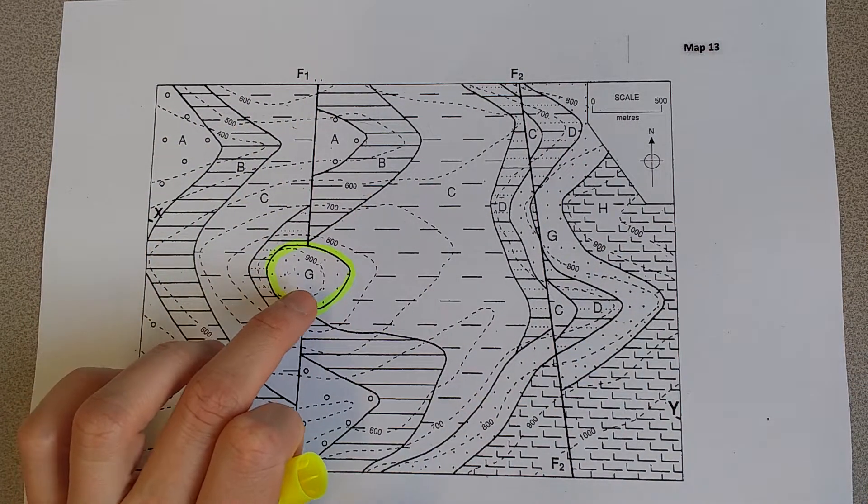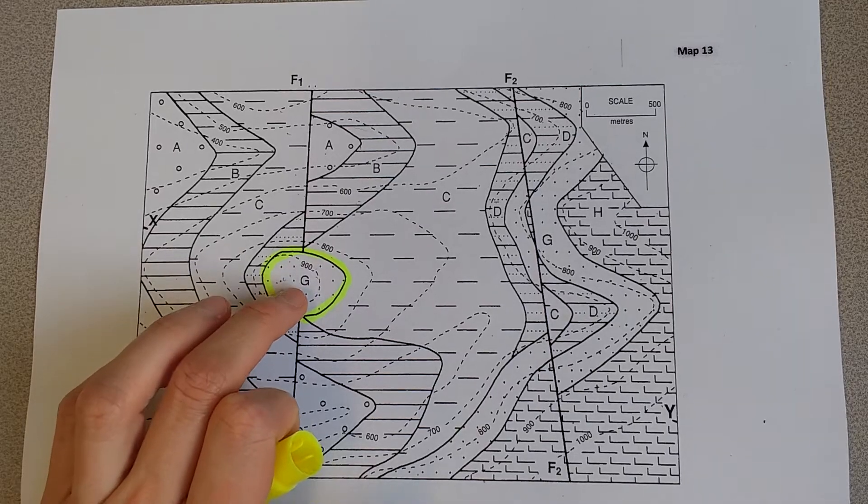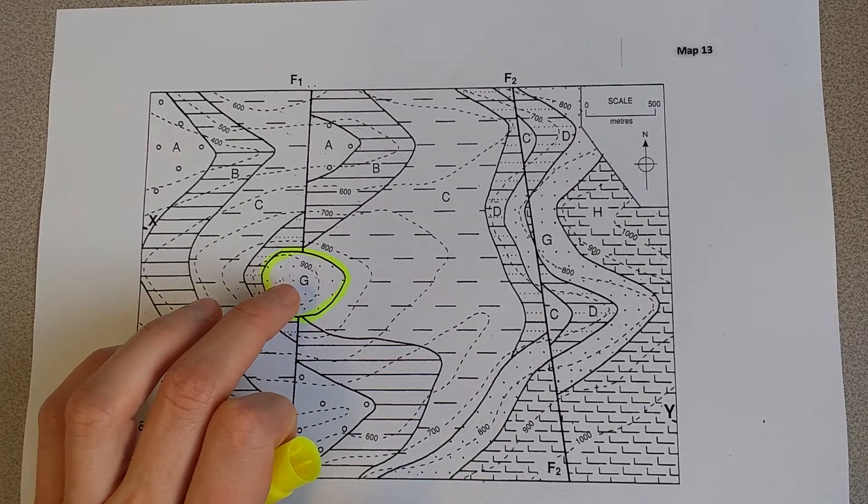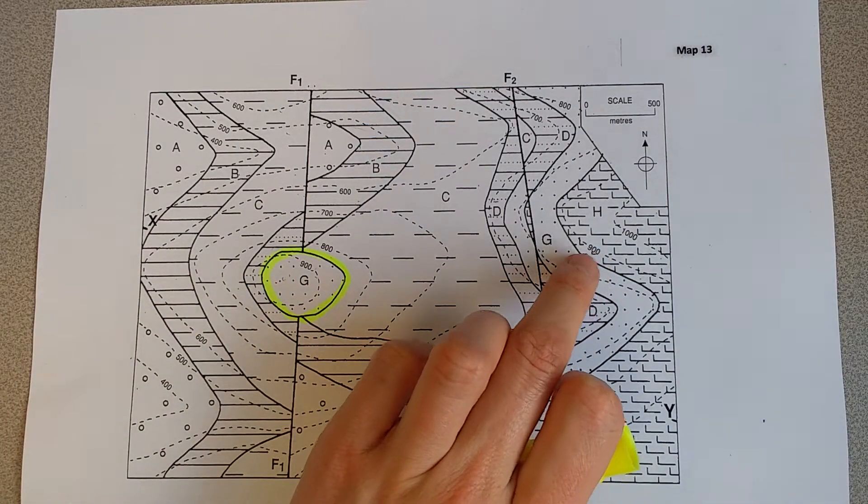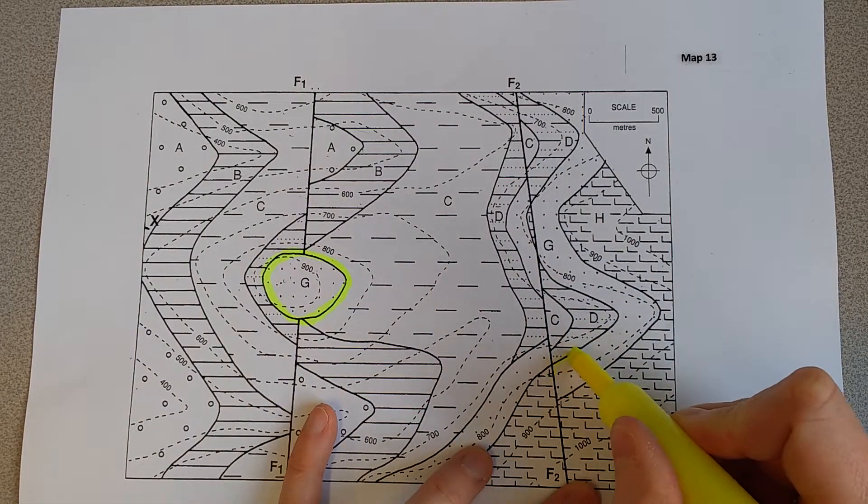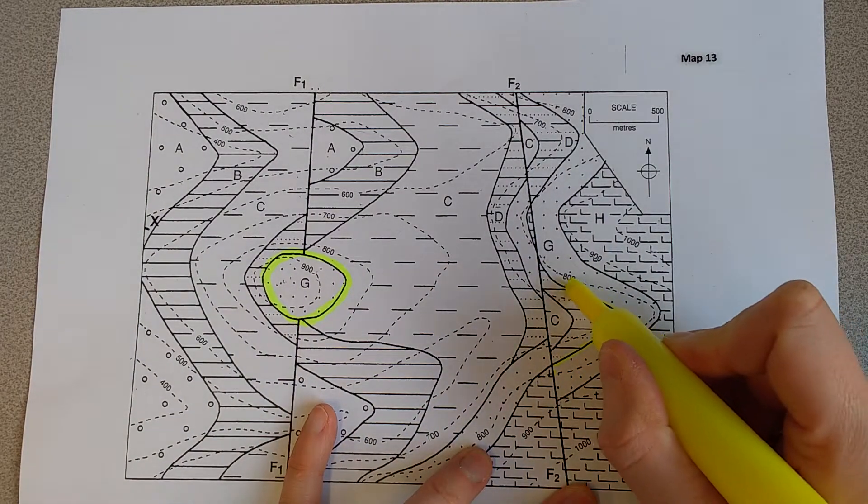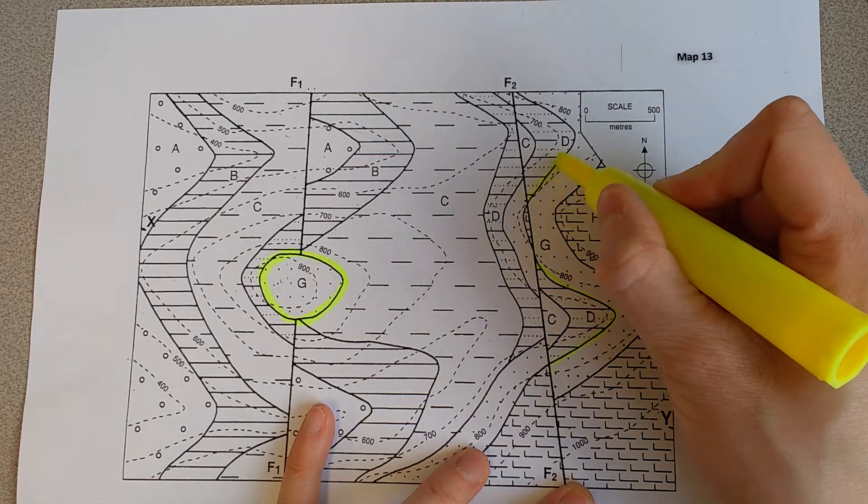Now because I know that unit G is above the unconformity, I can look elsewhere on the map where I've got G. So I've also got G over here, so I also know that this boundary here must also be an unconformity.